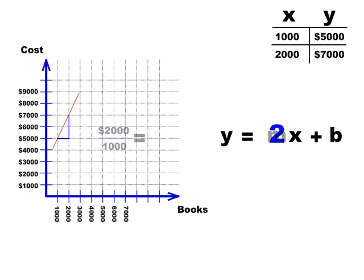Let's extend the line now and see where it crosses the y-axis. It hits the y-axis at $3,000. That's represented in our equation by B. So we know how to represent this line now: y equals 2x plus 3,000. We've now modeled a real-world situation using math.